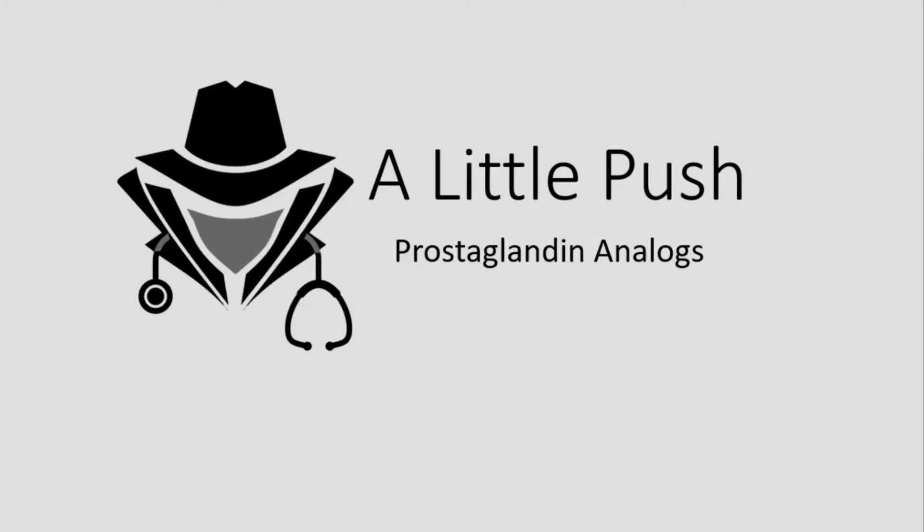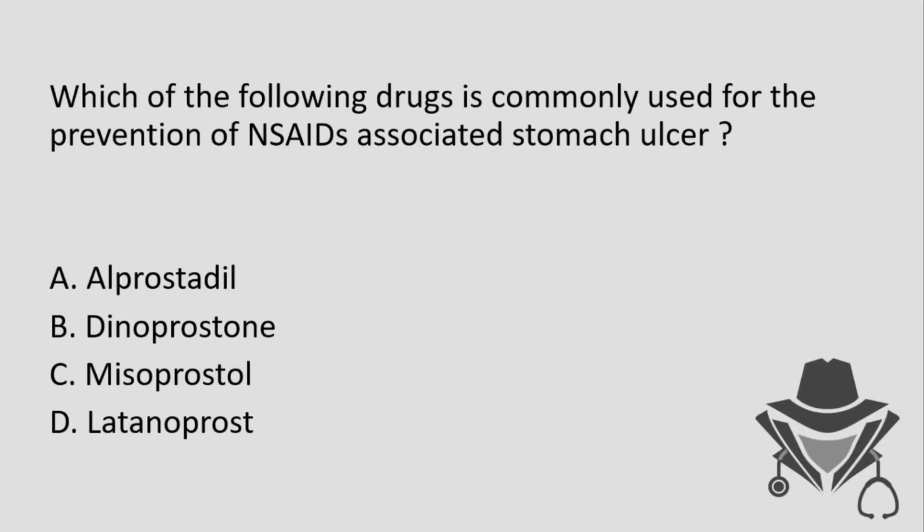Hello guys and welcome to another video. Let's take a new question: which of the following drugs is commonly used for the prevention of NSAIDs-associated stomach ulcer? A) Alprostadil, B) Dinoprostone, C) Misoprostol, and D) Latanoprost.